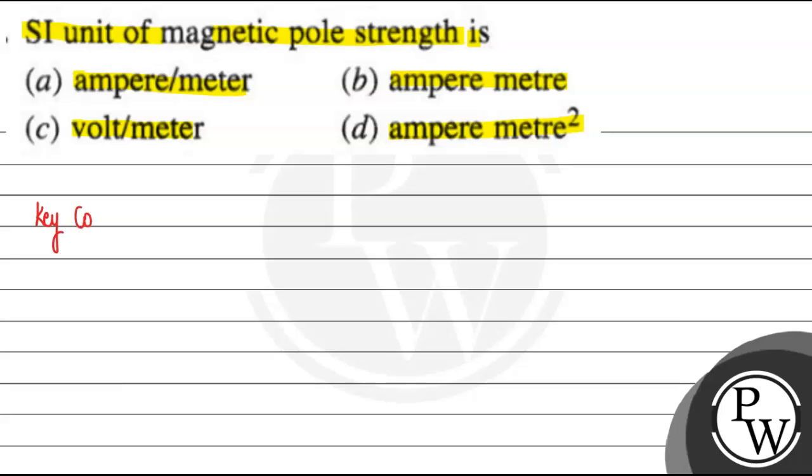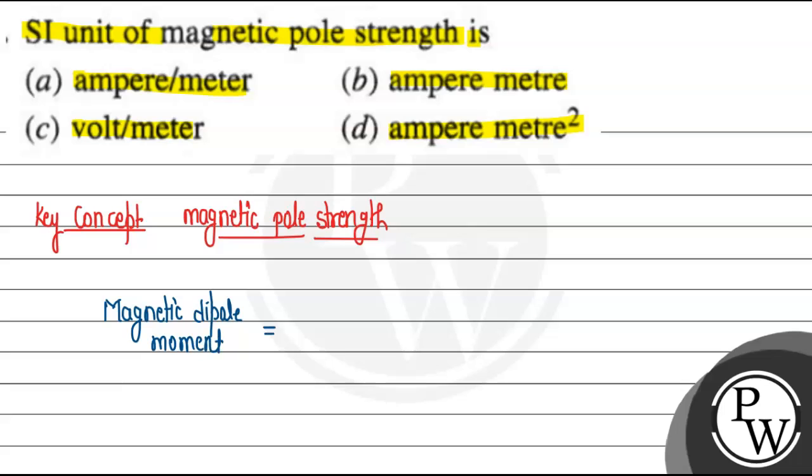The key concept we have here is magnetic pole strength, which we'll call m. Magnetic dipole moment equals m times the length of magnet.